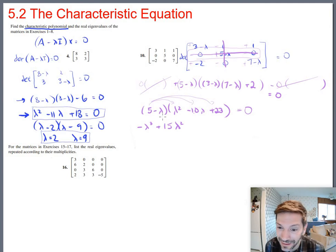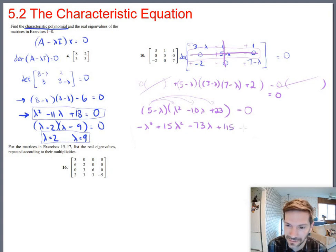Let's get the lambda terms. There's minus 50 and minus 23, so minus 73 lambda. And then just the constant term, which is 5 times 23, which is 115 equals 0. So that should be the characteristic polynomial. I'm actually going to put the video on pause just for a second and check to make sure I didn't screw something up. Yeah, so that's correct. That's the characteristic polynomial.